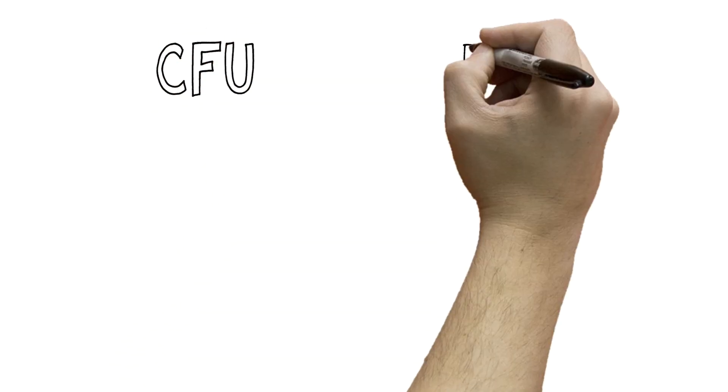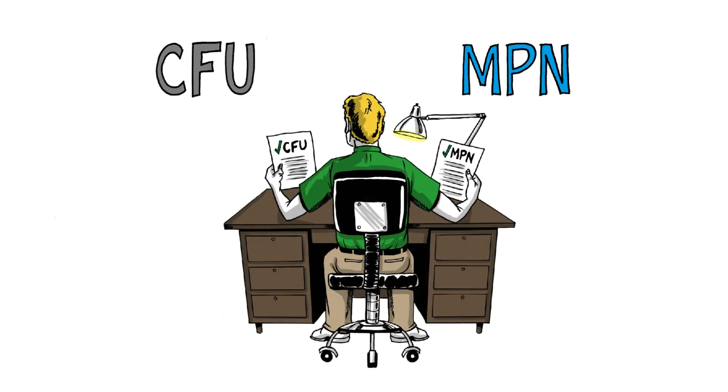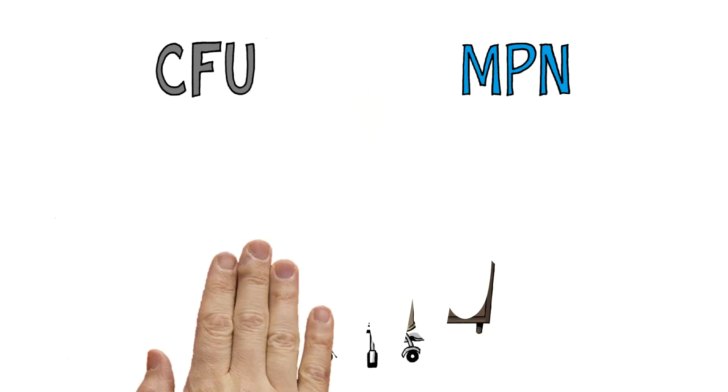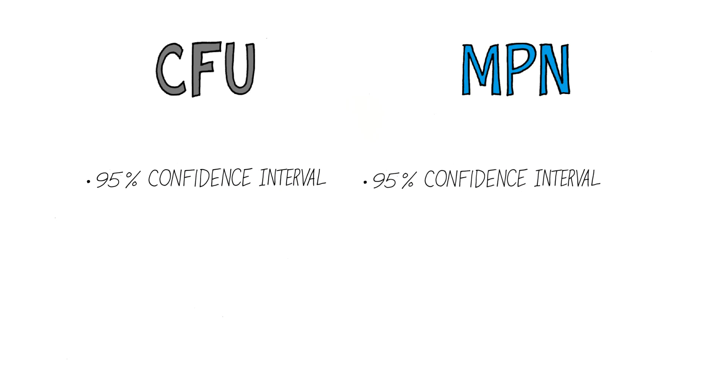Laboratories and agencies worldwide use MPN and CFU. Both measurements are a well-established means to estimate the number of bacteria in a sample, and both carry a 95% confidence interval.